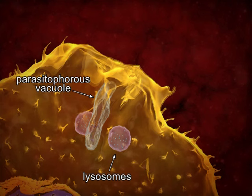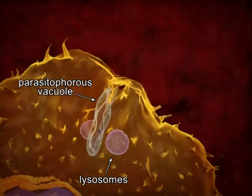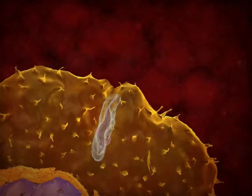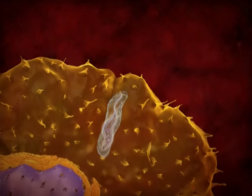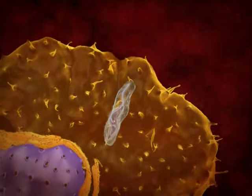Host cell lysosomes migrate toward the internalization region and fuse with the parasitophorus vacuole. The lysosomal content is released in the vacuole, however, the parasite is not affected.